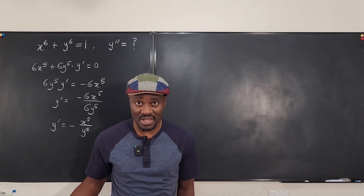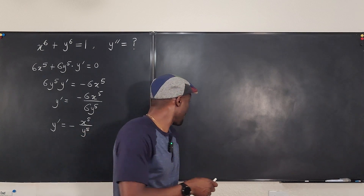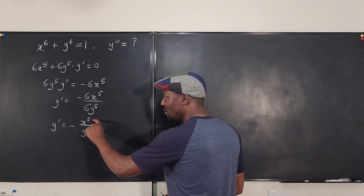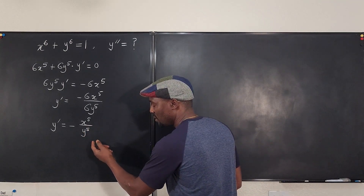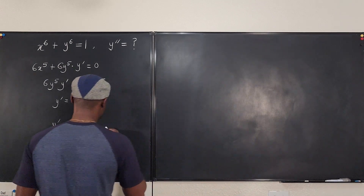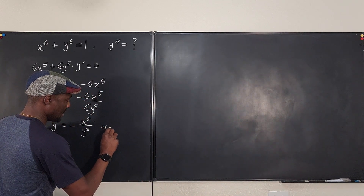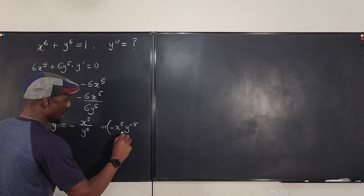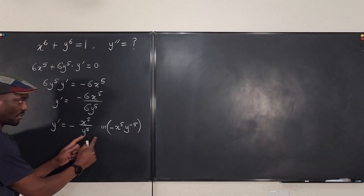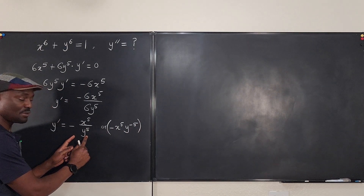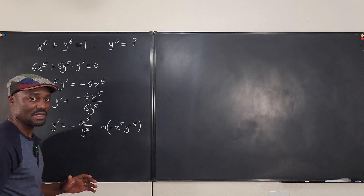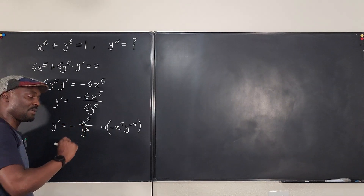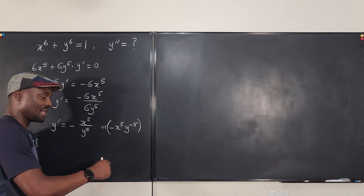Everybody should be able to do that. But the next thing you need to do is differentiate this one more time. We have two options: either use the quotient rule since this is a quotient, or rewrite it as a product — negative x to the fifth times y to the negative five — and use the product rule. Whichever way you do it, you should get the same answer. For simplicity, it's always better to use the quotient rule because the product form can get messy sometimes.